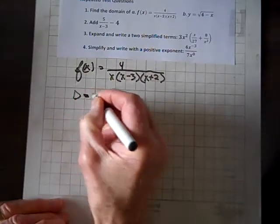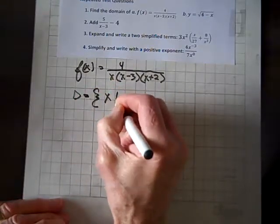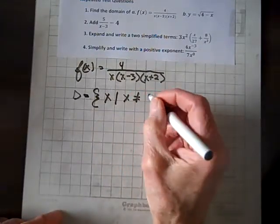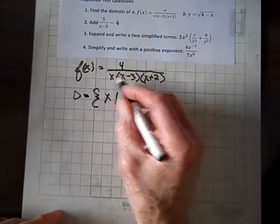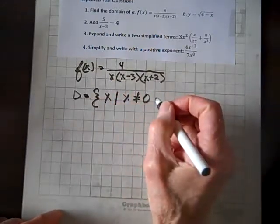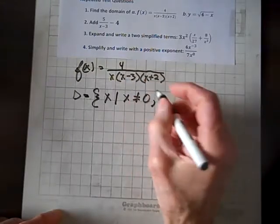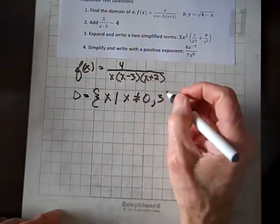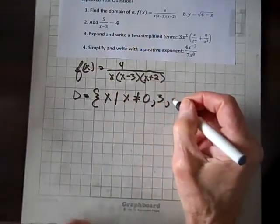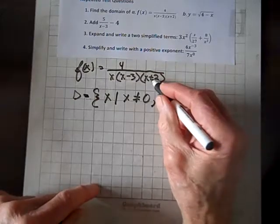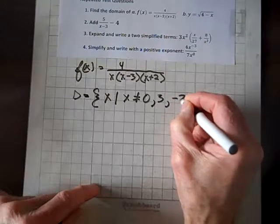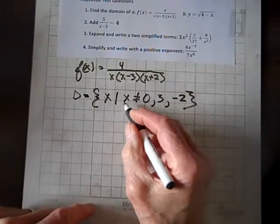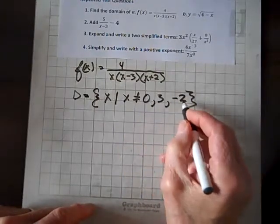So we just need to know what values of x will take this denominator to zero. So the domain equals the set x such that x is not equal to... if we let x be zero, this denominator will become zero. If we let x be three, that factor will be zero, and so the whole denominator will go to zero because zero times anything is zero. And if we let x equal negative two, we'll also have division by zero, which is undefined. So the domain is all reals except zero, three, and negative two.